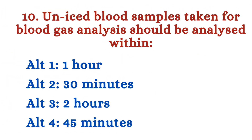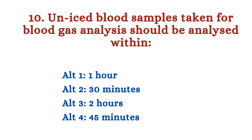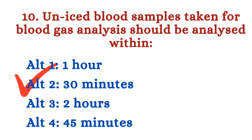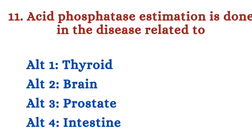Question number 10: Un-iced blood samples taken for blood gas analysis should be analyzed within — Option 1: 1 hour. Option 2: 30 minutes. Option 3: 2 hours. Option 4: 45 minutes. Un-iced blood samples taken for ABG should be analyzed within 30 minutes.